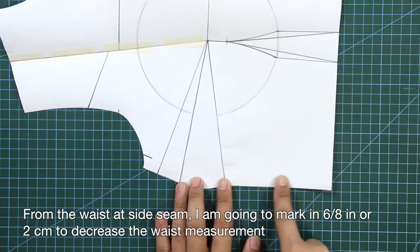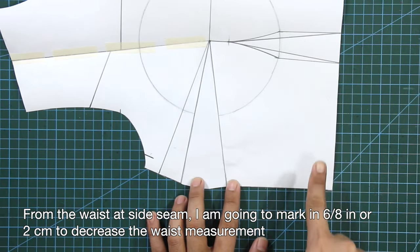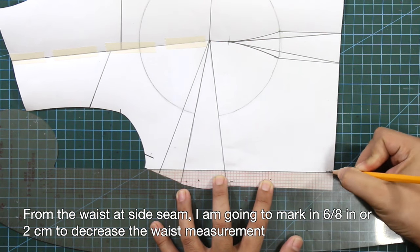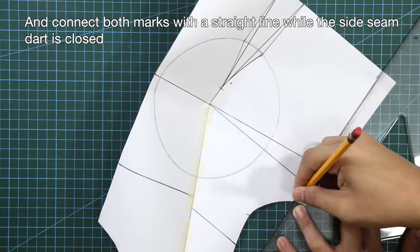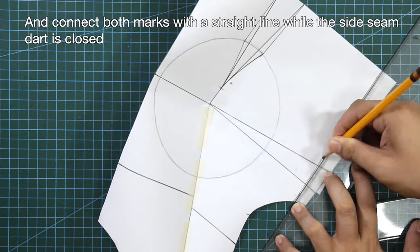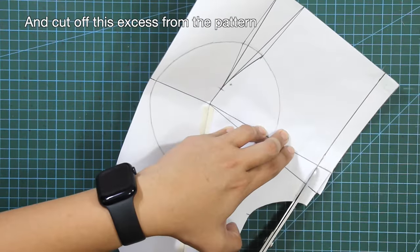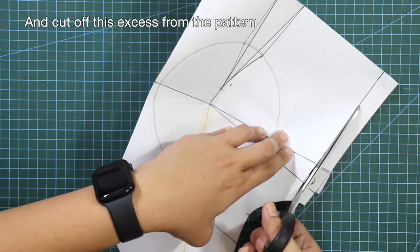From the waist at side seam, I'm going to mark in 6/8 of an inch or 2 centimeters to decrease the waist measurement. Connect both marks with a straight line while the side seam dart is closed, and cut off this excess from the pattern.